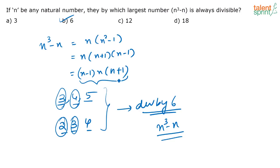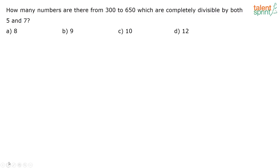The correct answer is option B, which is 6. The product of any three consecutive numbers always has one number divisible by 3 and another divisible by 2, so such numbers will always be divisible by 6.